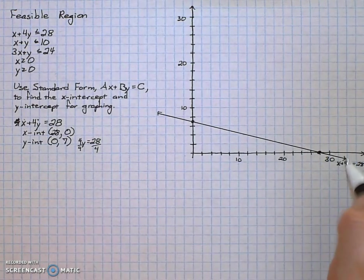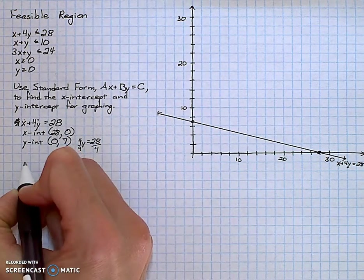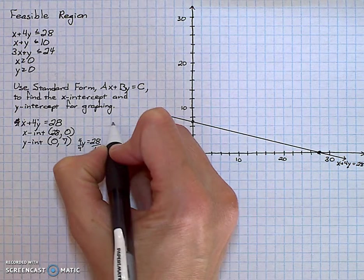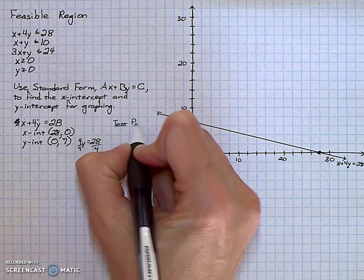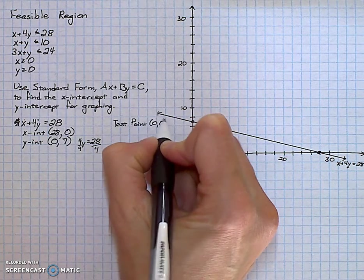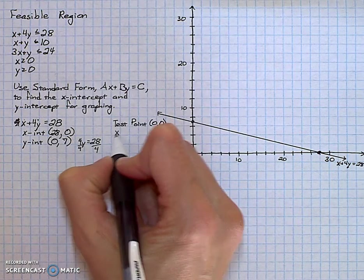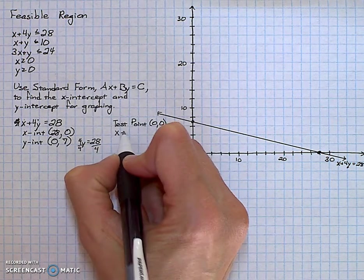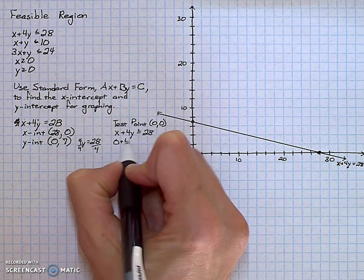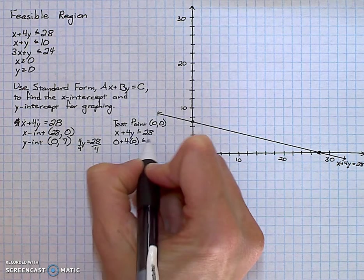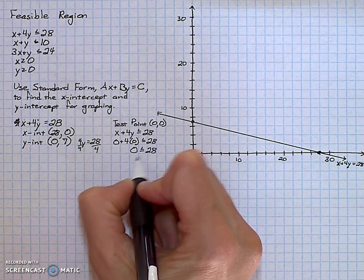And this line is the line x plus 4y equals 28. But the original statement was an inequality of shading. So I need to decide what side of the line to shade. I'll use a test point of 0, 0 because that point is not on my line and is easy to do arithmetic with. I substitute 0 and 0 into the x and y values of the original inequality. The left-hand side becomes 0. 0 is less than 28, which is true.